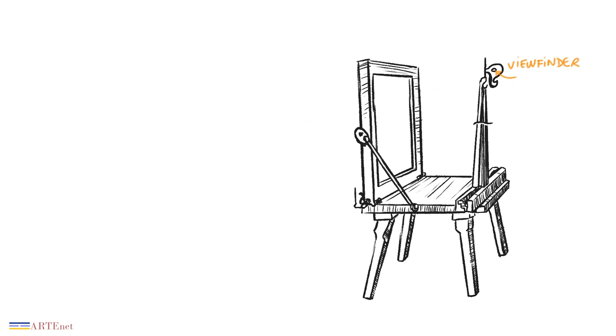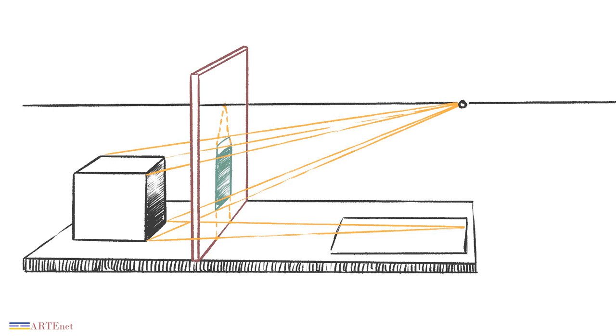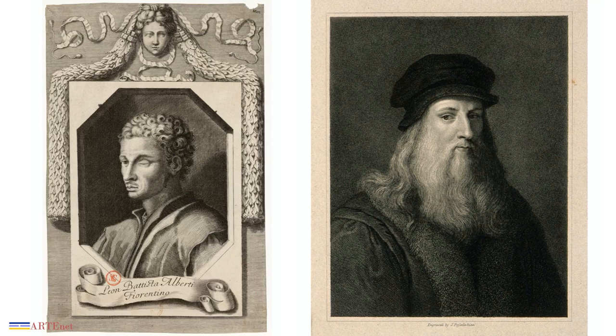These prospectographs were also used by important artists. The most simple and commonly used devices were based on the principle of intercepting and fixing the figure with the plane of intersection of the visual cone. This method was first set forth by Leon Battista Alberti and brought into standard procedure by Leonardo da Vinci.